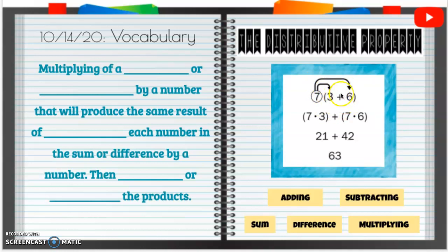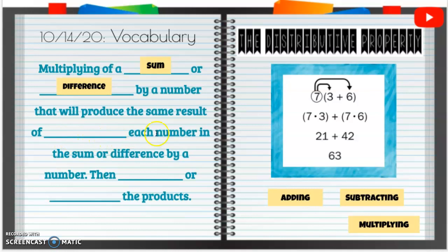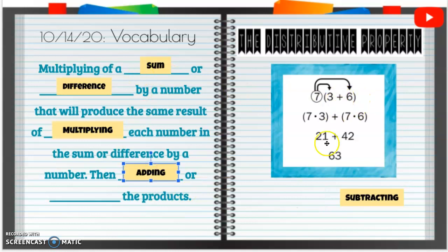So the multiplying of a sum or difference by a number will produce the same result of when you multiply each number in the sum or difference by a number. Then you're going to be either adding or subtracting your products, because with a sum or difference, when you pull that down, you'll be either adding or subtracting the products.